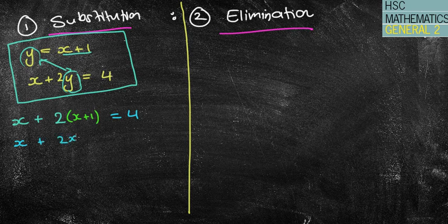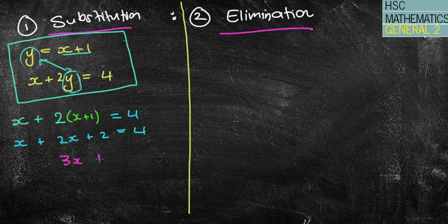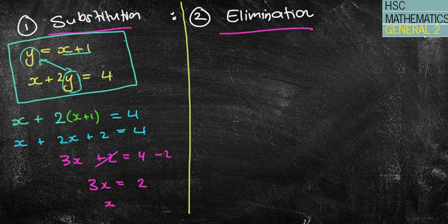So x plus 2x plus 2 equals 4. Now, I wonder if you know why I replaced that? Hopefully you recognize on its own, with the x's and the y's, I'll never be able to actually solve it on its own, by substituting, now I've simply got 3x's plus 2 equals 4, I can then write 3x, I'm going to take the 2 away, 3x equals 2, therefore x equals 2 thirds.